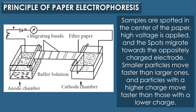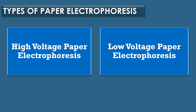The samples are spotted in the center of the paper. High voltage is applied and the spots migrate towards the oppositely charged electrodes. Smaller particles move faster than the larger ones, and particles with a higher charge move faster than particles with lower charge. After electrophoresis, the separated components can be detected by a variety of staining techniques depending upon their chemical identity or chemical nature.